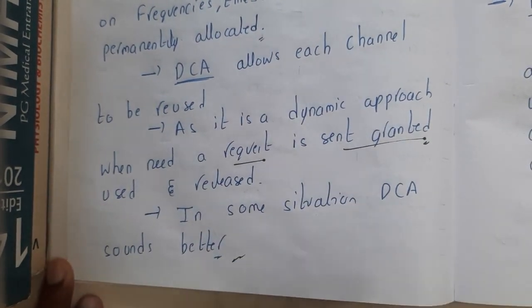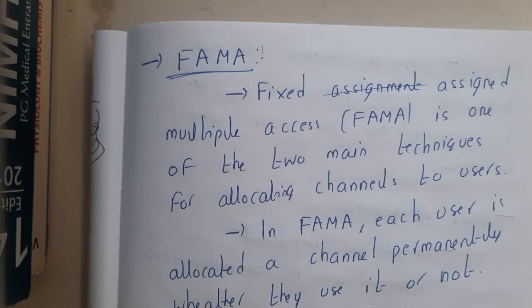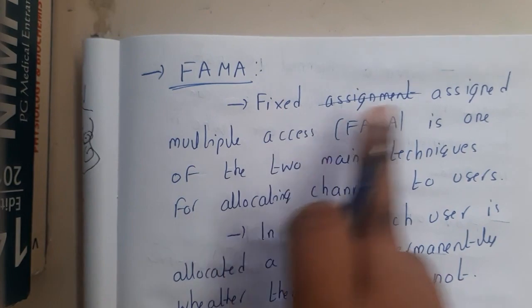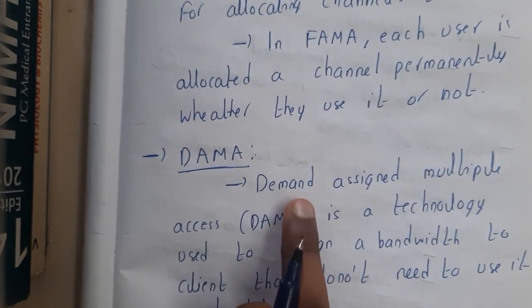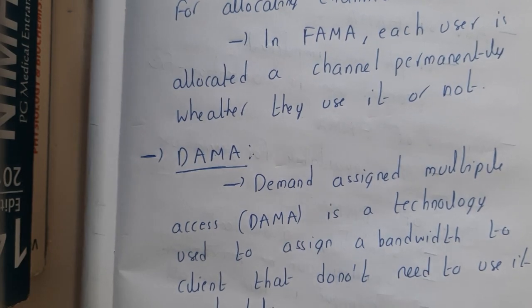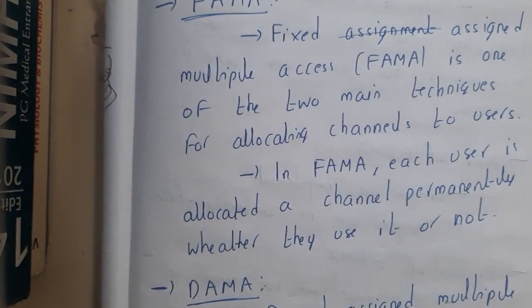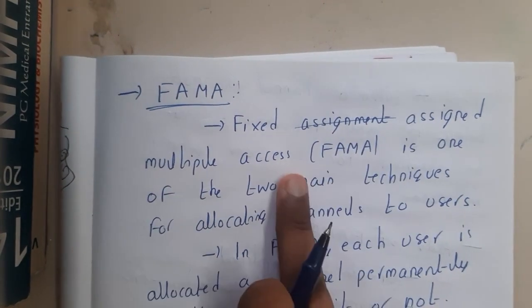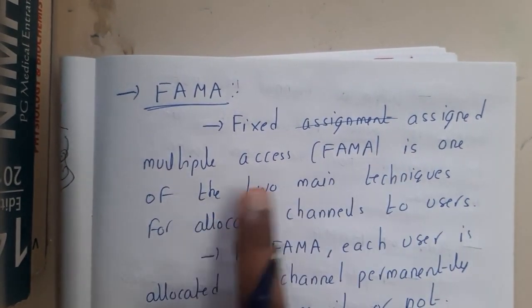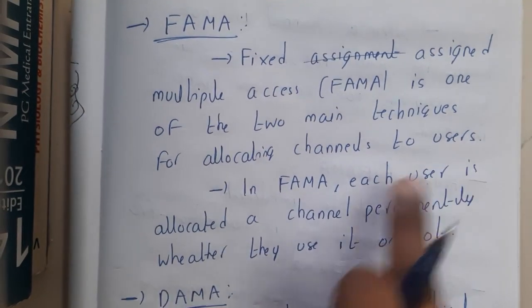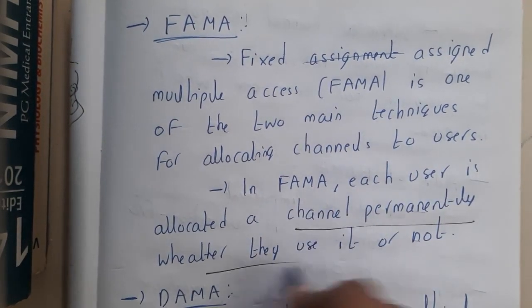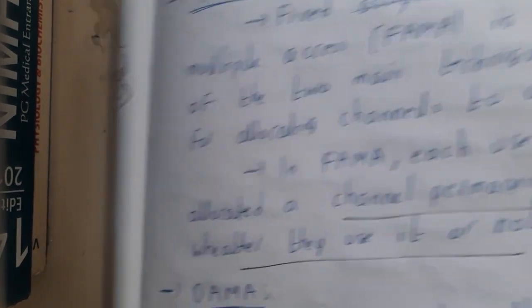Now let us discuss two more terminologies: FAMA, which is Fixed Assignment Multiple Access, and DAMA, which is Demand Assignment Multiple Access. These are similar to FCA and DCA but differ in some definitions. FAMA is one of the two main techniques of channel allocation to users — a particular channel is permanently allocated to the user.